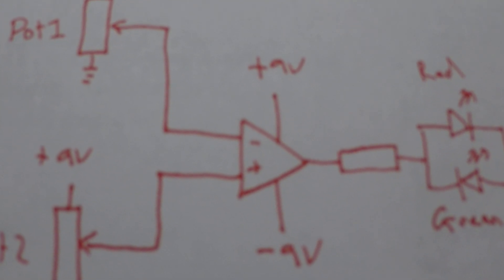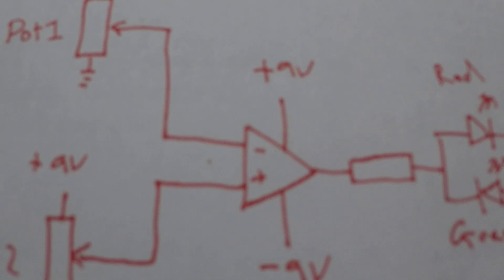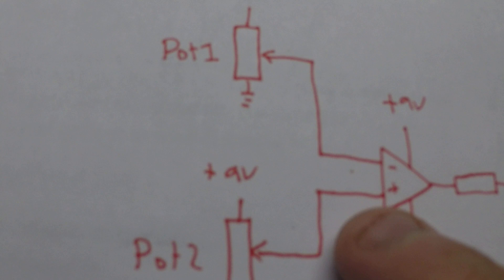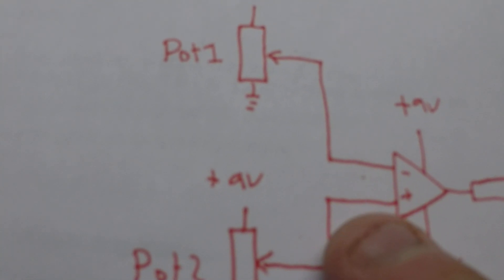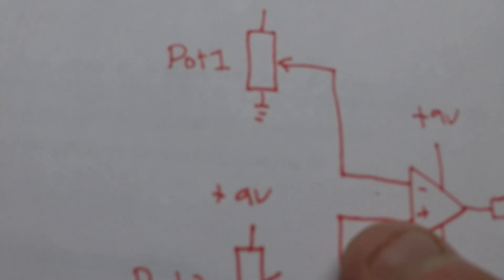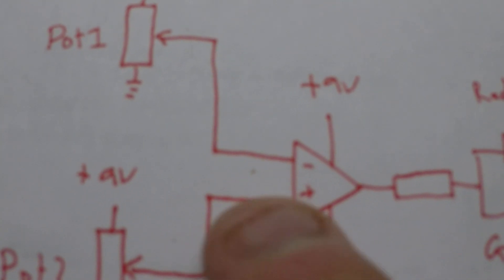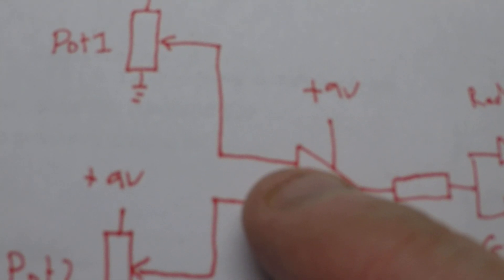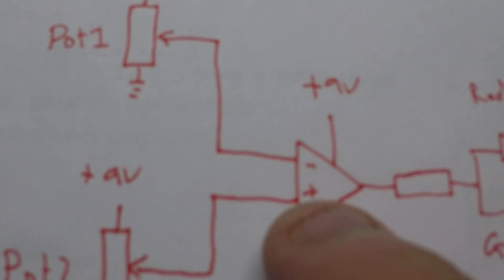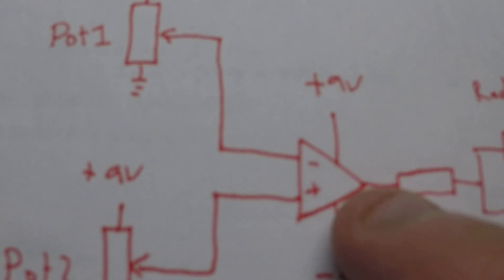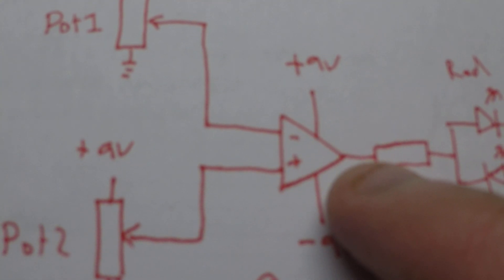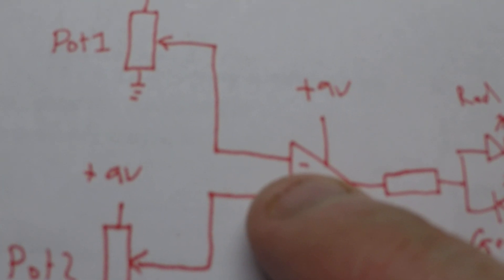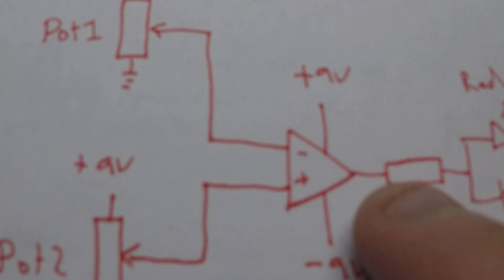So this is in its comparator state. So basically, with a comparator, it's whichever voltage is the highest out of these two inputs wins. And then what does that mean by winning? Well, if let's say the negative input has a higher voltage than the positive input, then this will be thrown down to minus 9 volts. If the positive input has a greater voltage than the negative input, then it will go positive.